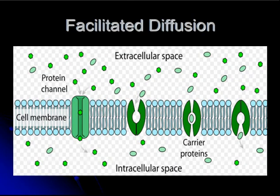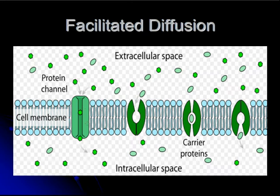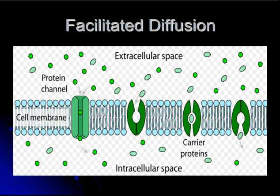Students should draw a picture of facilitated diffusion underneath the passive transport slide. In facilitated diffusion, materials can move across or through the cell membrane. Extracellular space means outside of the cell; intracellular space means inside of the cell. Here is the cell membrane — the phospholipid bilayer — and there are sometimes embedded proteins in the cell membrane. These could include channel proteins or carrier proteins, and these proteins will help particles move from areas of high concentration to low concentration. The green particles are highly concentrated outside of the cell, so they will do facilitated diffusion through a channel protein, or through a carrier protein, which is also allowing particles to move into the cell from an area of high concentration to an area of low concentration.